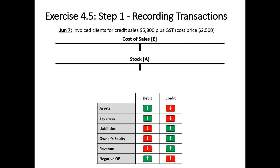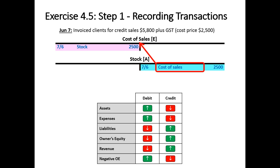Let's deal with the cost of sale. The cost price of this sale was $2,500 — that's an expense so that'll be a debit, and we have an asset going down which will be a credit. The cost of sales will reference stock, and the cost of sales reference will be to the stock ledger.